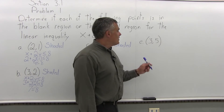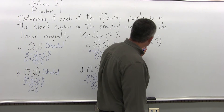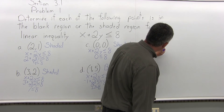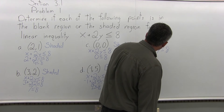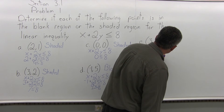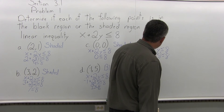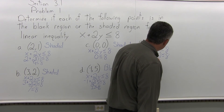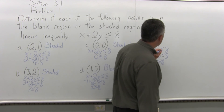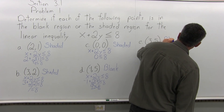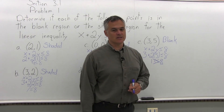Finally, part e: is the point 3 comma 5 in the shaded or blank region of x plus 2y is less than or equal to 8? Put in 3 for x and 5 for y, giving 3 plus 2 times 5 is less than or equal to 8. That's 3 plus 10, which is 13 is less than or equal to 8 — certainly not true. Therefore, the point (3, 5) is in the blank region of the graph of the linear inequality.